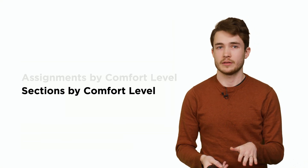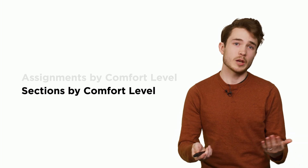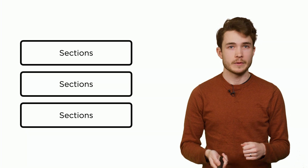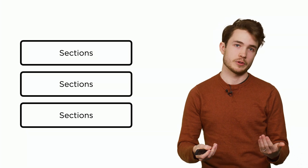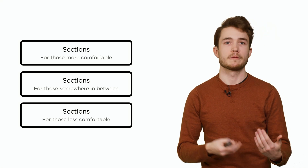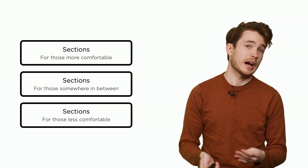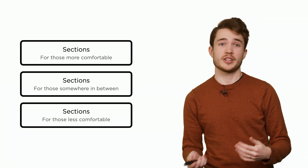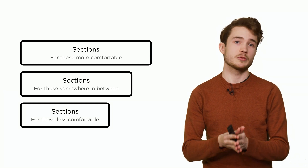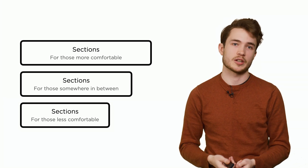Thinking about our sections: our sections are really trying to lower the course's floor. For a while in CS50, we only had one type of section, but now we've had maybe not just one, but three — varied based on comfort level. There's a section for those who are more comfortable, a section for those who are less comfortable, and a section for those somewhere in between. These sections vary based on the content they cover, how they cover it, and also their size. Sections for those who are less comfortable are often smaller, so students can ask questions freely and connect with their teaching staff member.